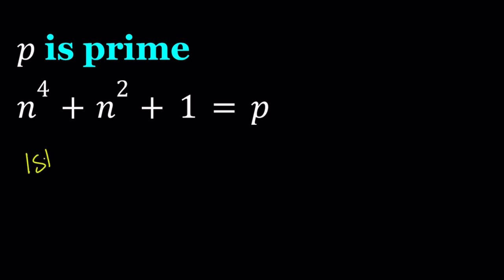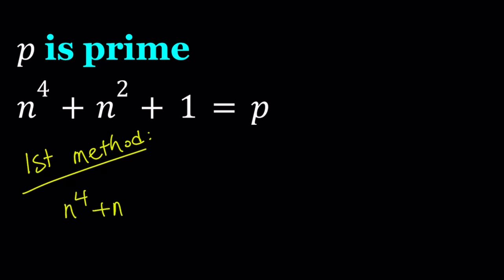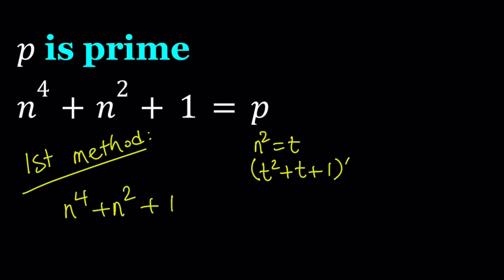Let's start with the first method. For my first method, which is a little different than the normal method, I'm going to multiply n to the fourth plus n squared plus 1 by something. When you look at an expression like this, if you say suppose n squared equals T, then you get T squared plus T plus 1. The presence of something like this should almost always remind you of difference of two cubes. Because if you multiply this by T minus 1, you get T cubed minus 1, which is a difference of two cubes.